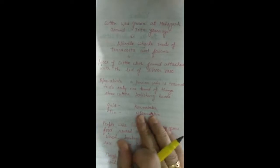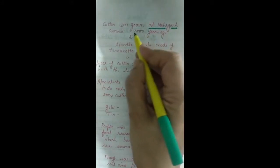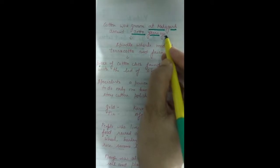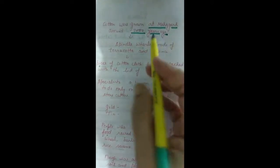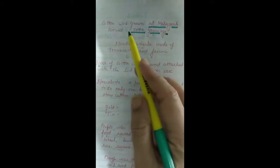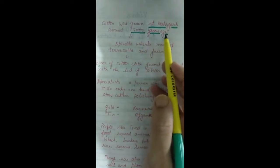Archaeologists also found that people of Harappan civilization used cotton to make clothes. At Mehrgarh, archaeologists found the evidence that people used cotton around 7000 years ago.